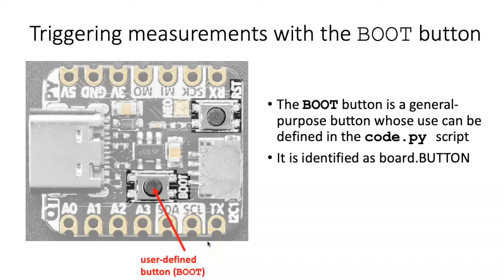One additional feature we can add to the code.py script is the ability to signal the script to begin collecting data with a button press. Otherwise, the code will start executing as soon as you turn the board on or save the code. In some cases, especially when collecting data to save in memory, you don't want it collecting data until you're ready. There is a button on the board described as the boot button — a general-purpose button you can define for any use in your script. We can refer to it as board.button.